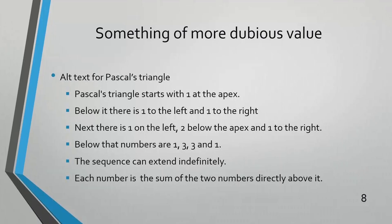My own view is that Pascal had too much time on his hands. But this is the alt text I wrote for Pascal's triangle: 'Pascal's triangle starts with one at the apex. Below it there is one to the left and one to the right. Next there is one on the left, two below the apex, and one to the right. Below that numbers are one, three, three, and one. The sequence can extend indefinitely. Each number is the sum of the two numbers directly above it.'